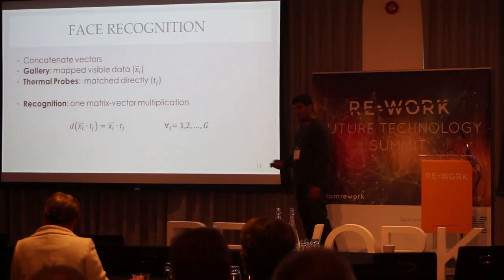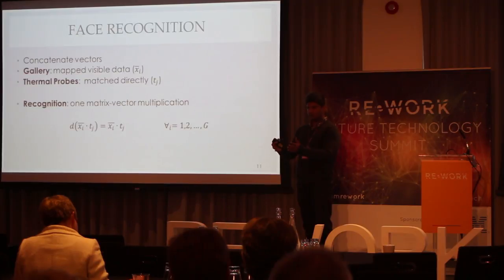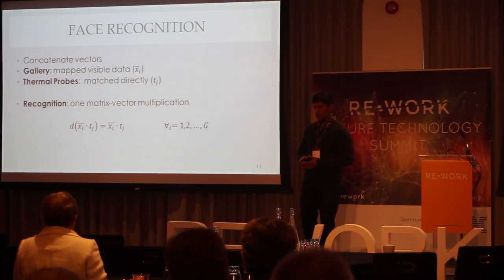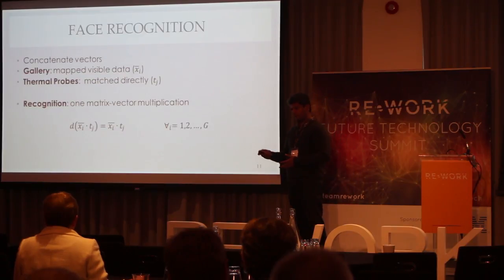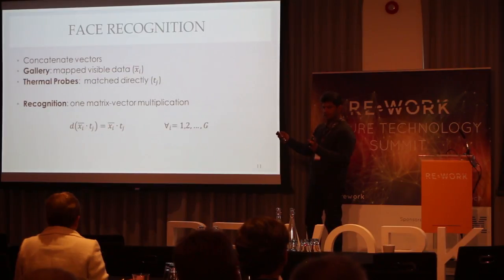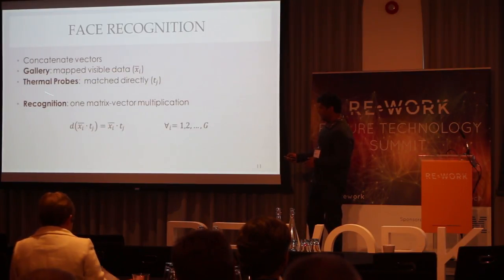The nice thing about this setup is that we learn the mapping and map our database images once offline very quickly. Then online in real time, where the thermal heat signatures are coming in, they do not need any mapping because the mapping is learned from the visible to the thermal domain. So the gallery images — the visible images — are already close in resemblance to the thermal images, and we just map directly the thermal images. This is really fast.